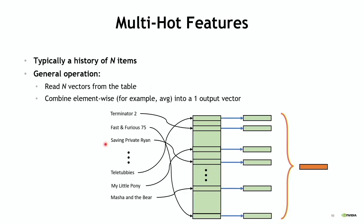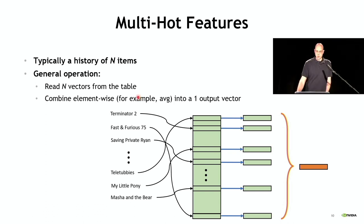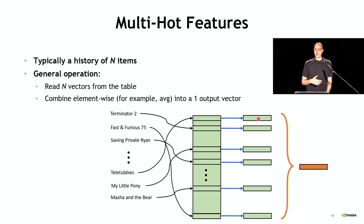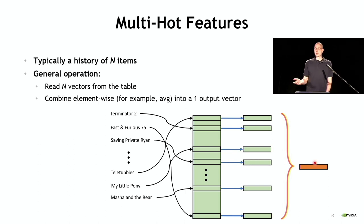An extension of these lookup tables are multi-hot features, typically used for a history of items — such as past movies watched or commented on. For N IDs, the embedding operation produces a single output vector. For example, with a sequence of six movies, each is looked up in the embedding table to get individual embedding vectors, and then a point-wise combination — say, computing the average — produces the orange output vector. You're doing N vector reads for one vector output; that ratio is called N-hot.